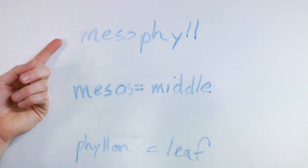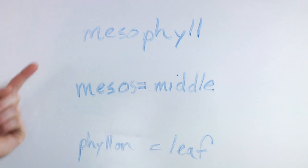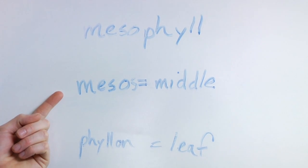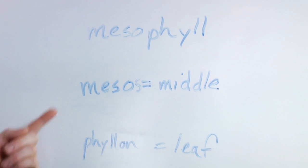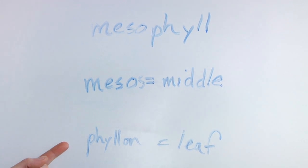Mesophyll, simply put, is made up of two Greek words. The first word is mesos, which means middle. The second word is phylon, which means leaf.